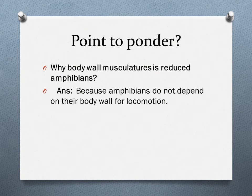Why is the body wall musculature reduced in amphibians? Because amphibians do not depend on their body wall for locomotion, the body wall musculature is reduced and appendicular musculature has become strong.